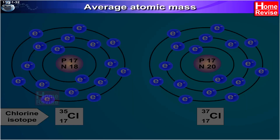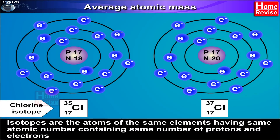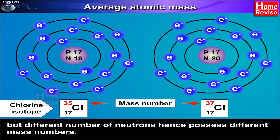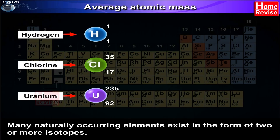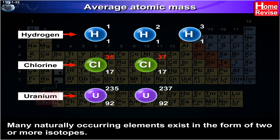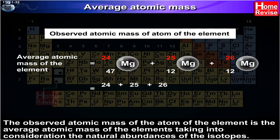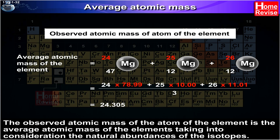Average atomic mass. Isotopes are the atoms of the same elements having the same atomic number, containing the same number of protons and electrons, but a different number of neutrons, hence possessing different mass numbers. Many naturally occurring elements exist in the form of two or more isotopes. The observed atomic mass of the atom of the element is the average atomic mass of the elements, taking into consideration the natural abundances of the isotopes.